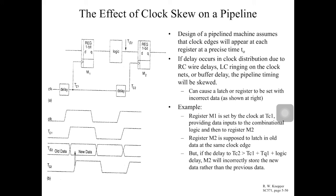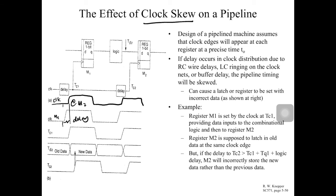In a pipeline, because there are many registers, the same clock has to run at different registers. This can lead to clock skew, which means the clock doesn't arrive at all registers at the same time. For example, the clock at M1 and the clock at M2 will have a slight delay between them — this delay is called clock skew.